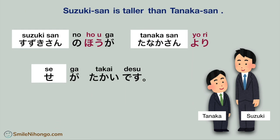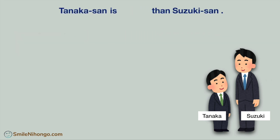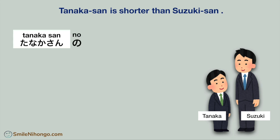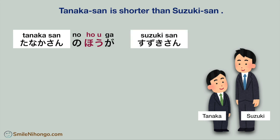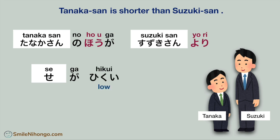Let's try the opposite. Now we are going to switch these two people in the sentence, which means we have to say Tanaka-san is shorter than Suzuki-san. You have to say: 田中さんのほうが鈴木さんより背が低いです。